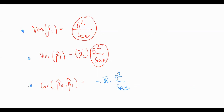We are almost at the end of this small series on simple linear regression. I will end this video here, but there is another surprise — we will do some R calculations to help you understand what β̂₀ and β̂₁ actually are. That will be the final part of this series. Stay tuned and see you in the next video. Thank you.